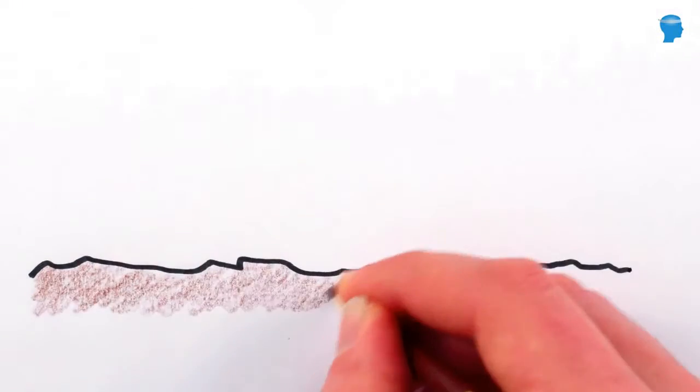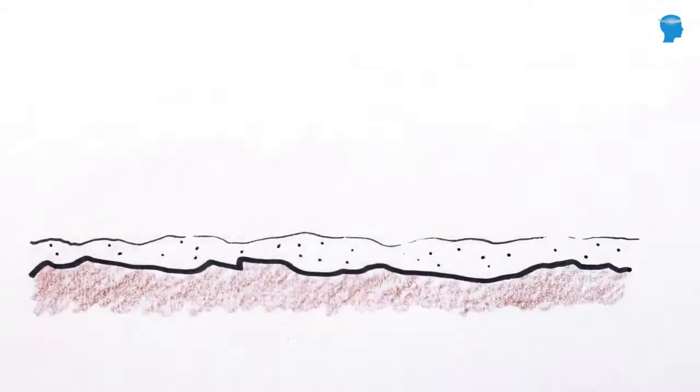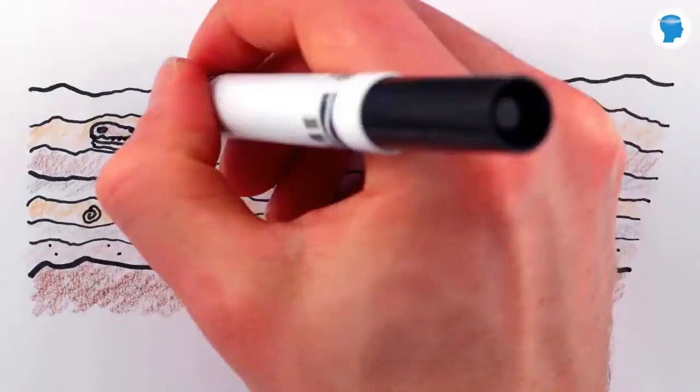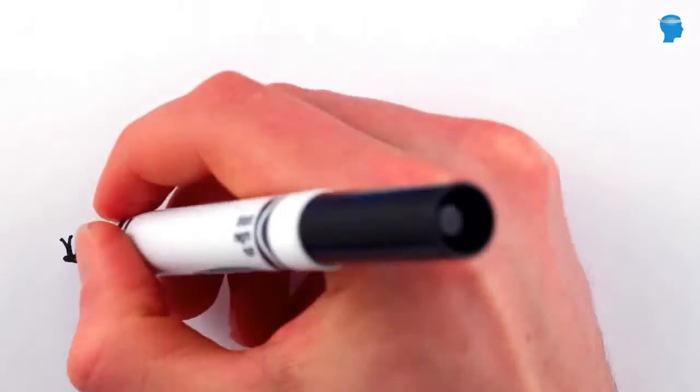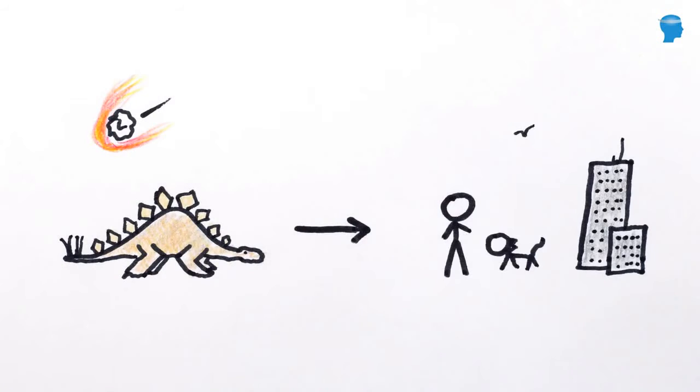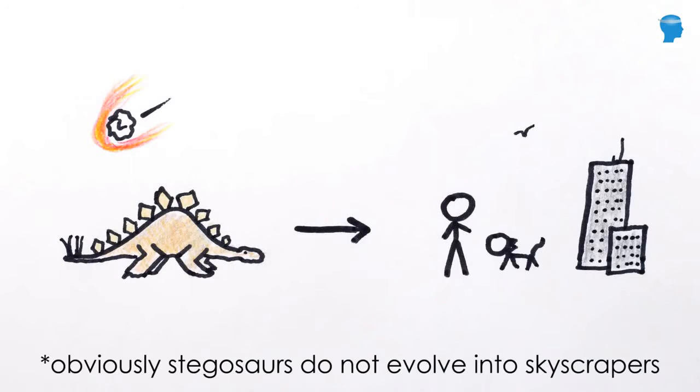Our oldest rocks show no signs of life, while newer and newer rocks reveal fossilized plankton, seaweed, snails, fish, trees, insects, dinosaurs, mammals, and so on. There absolutely was and is no denying the fact that life on Earth changes, and change over time is what evolution means.